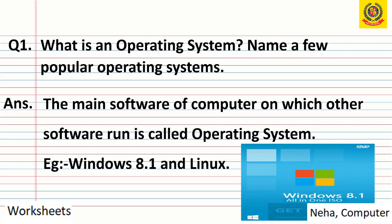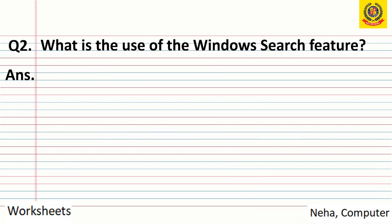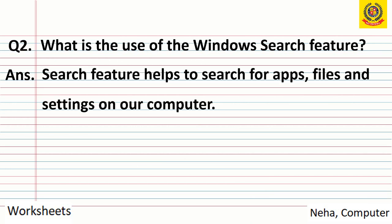Moving to question 2: What is the use of the Windows search feature? The answer is: the search feature helps to search for apps, files and settings on our computer. The word search means to find out something. So this feature helps us to find the applications, files and settings which we want to change in our computer system.